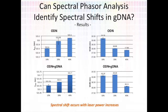Lastly, I've included some more of my data. Here we see spectral lambda max increasing with laser power for both the ODN and ODN plus genomic DNA treatments. And to the right of that, we can see a reduction in width as laser power increases between both treatments. So it's quite clear from this data that spectral shift occurs with laser power increases. Spectral phasor analysis identifies spectral shifts in genomic DNA microenvironments.